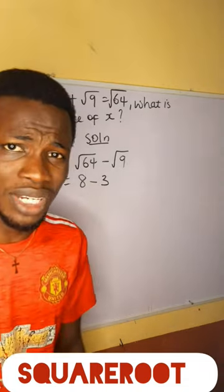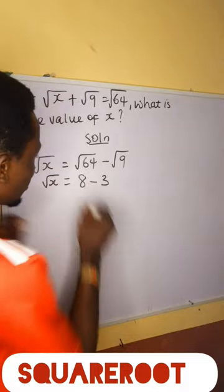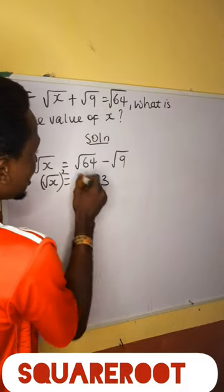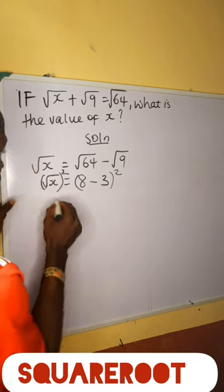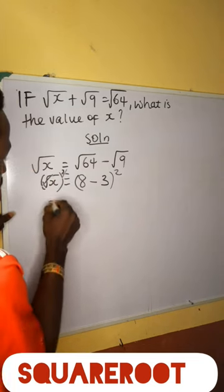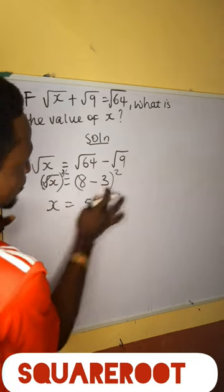But we are not asked to find the square root of x. We are asked to find x. To find x, simply square the answer that you get from here. So this square will cancel this square. We have that x is equal to 8 minus 3, which is 5, so it's 5 squared.